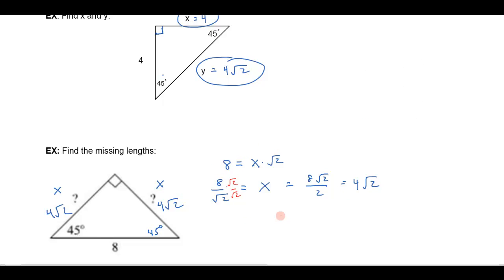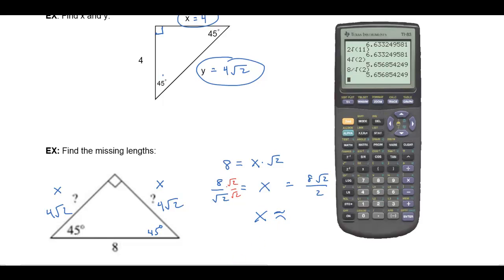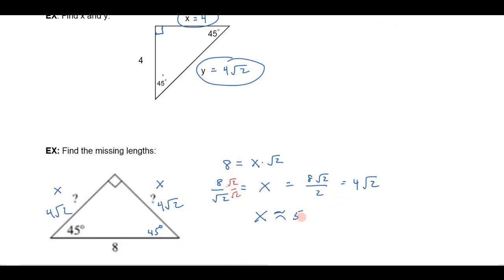So again, just reviewing. Let's write this here. So x is approximately 5.66 if I were to round that off, or 4 square roots of 2.